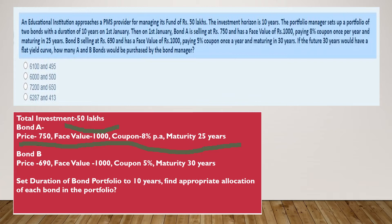How many Bond A and B would have to be purchased by the bond manager? We have to set the duration of the bond portfolio equal to 10 years by finding the appropriate allocation of each bond in the portfolio.